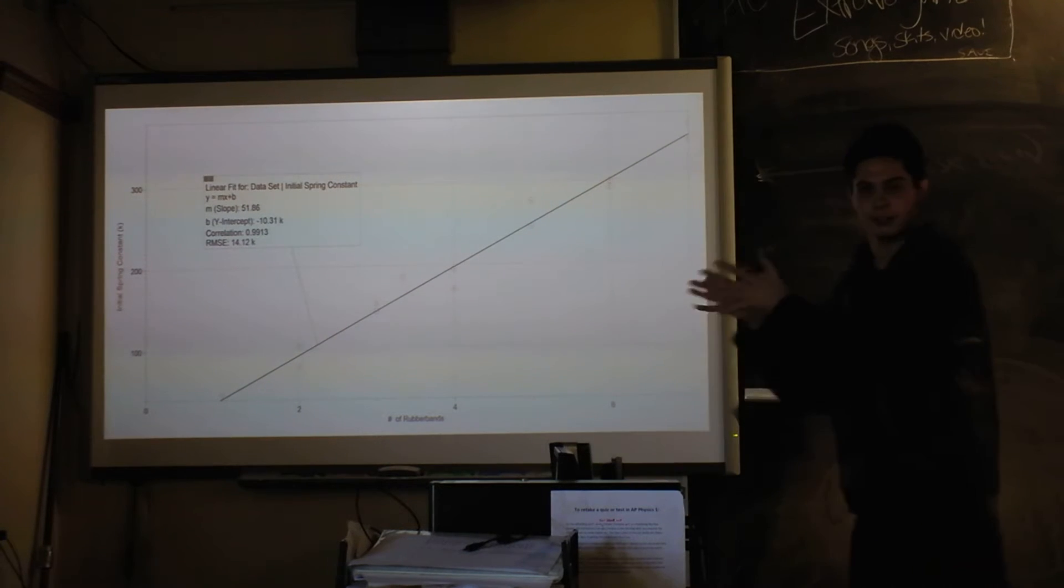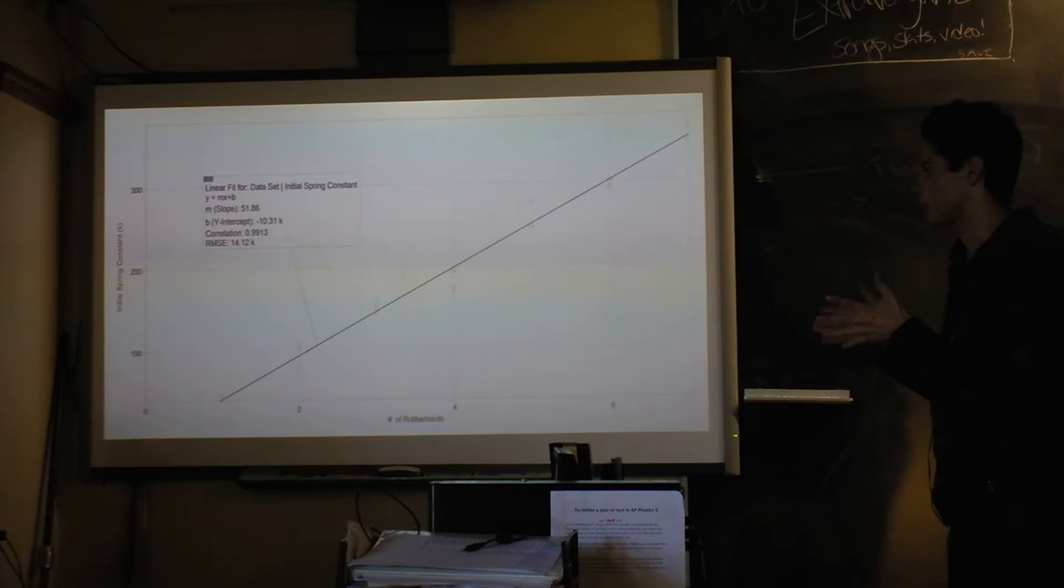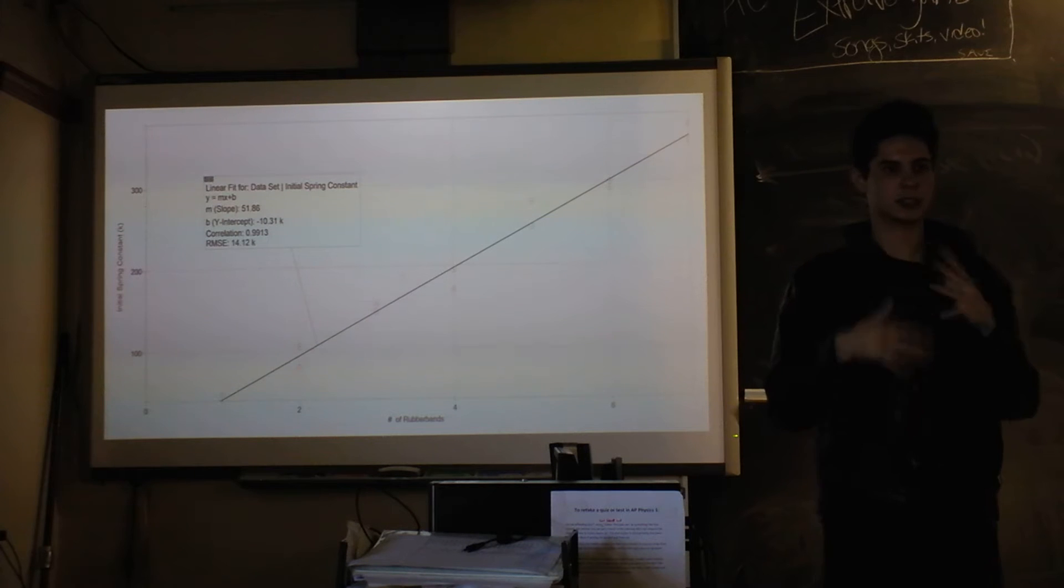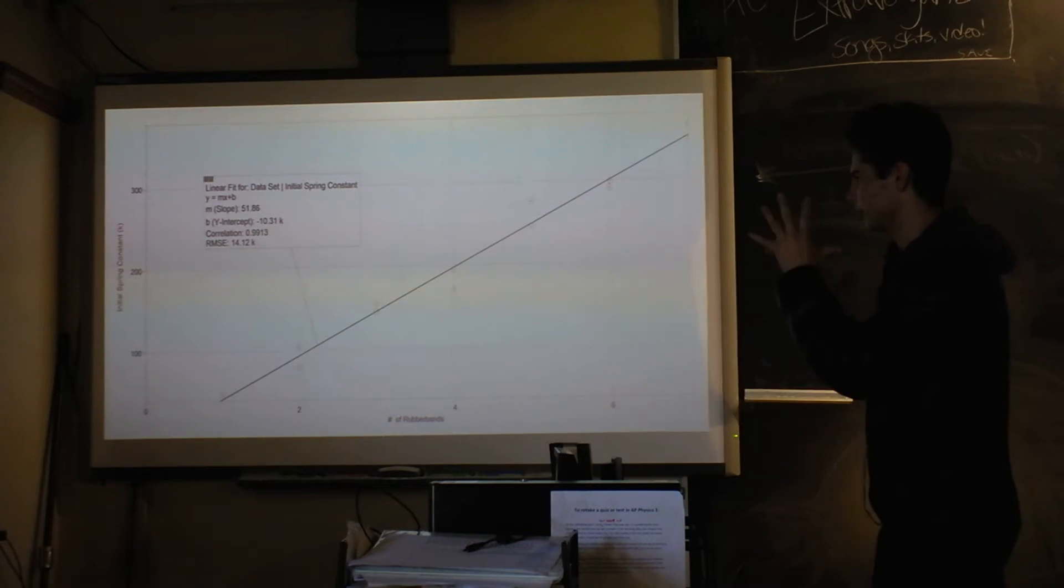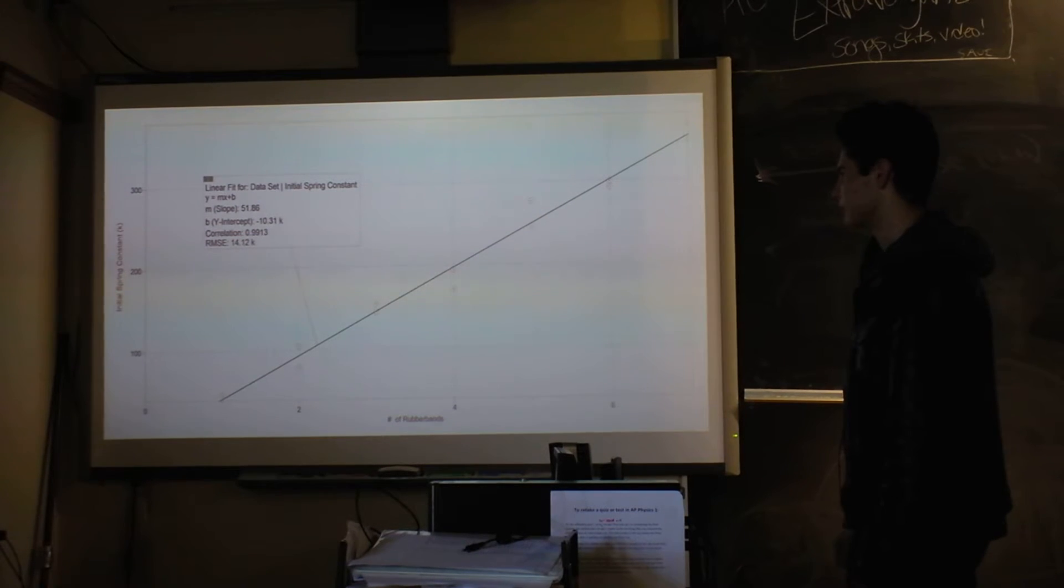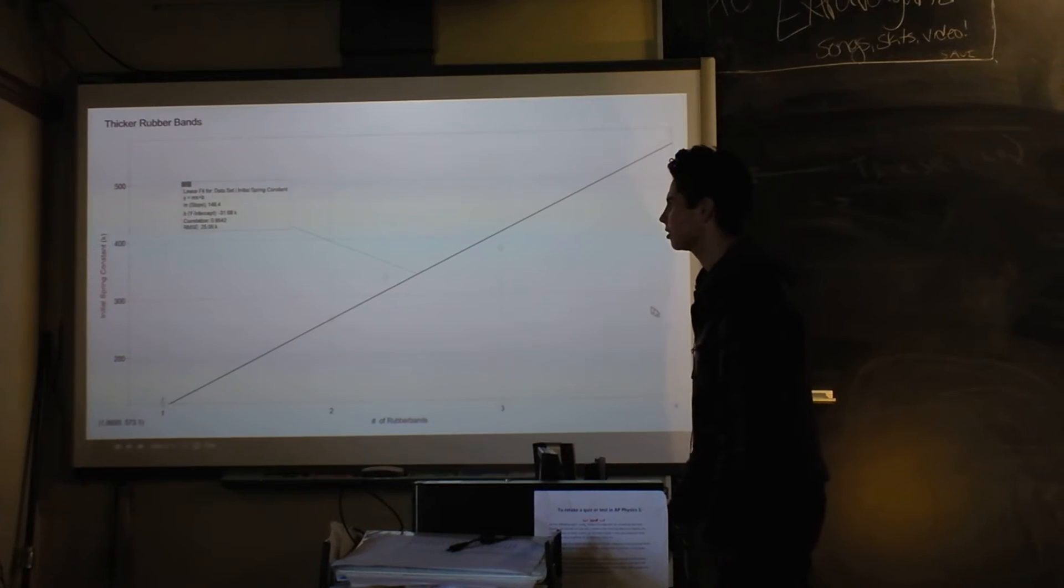And this is what I got - most definitely linear. So multiple springs, you just add them instead of doing your math, which is nice for calculations but not what I was expecting. Thicker rubber bands, same thing.